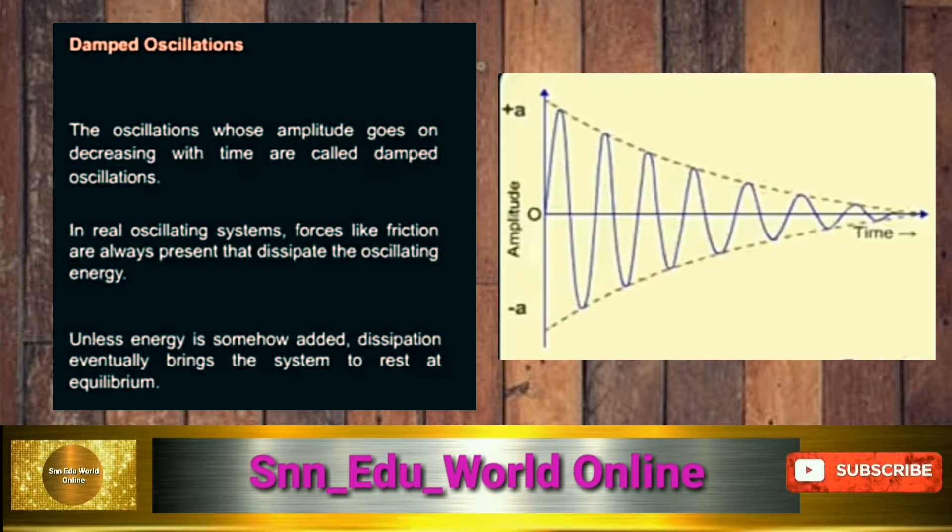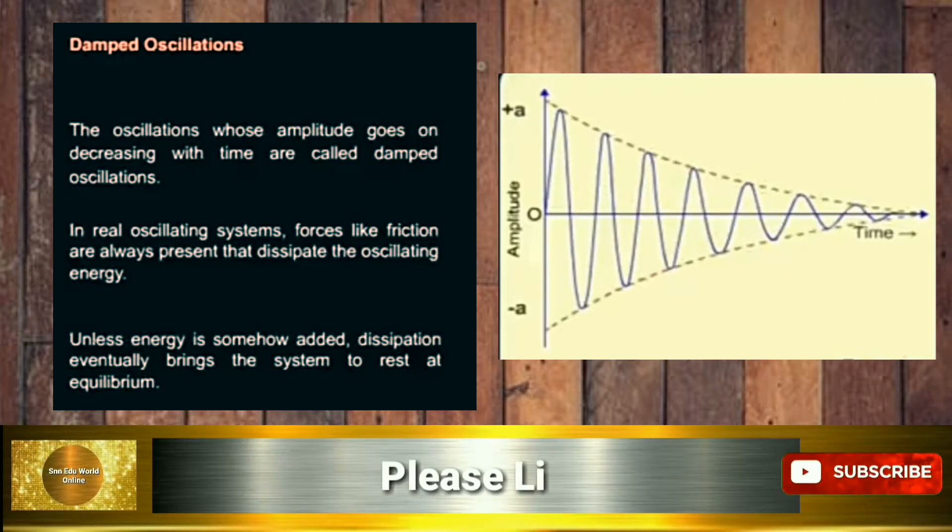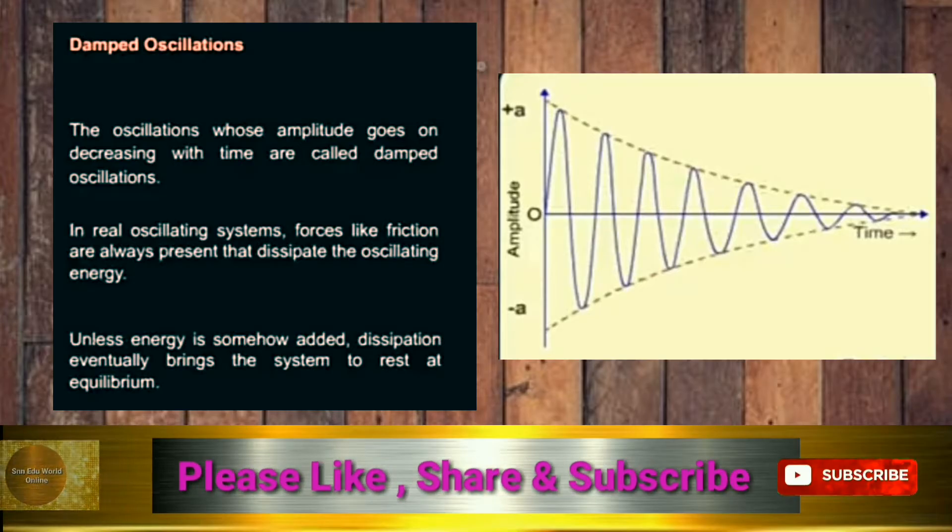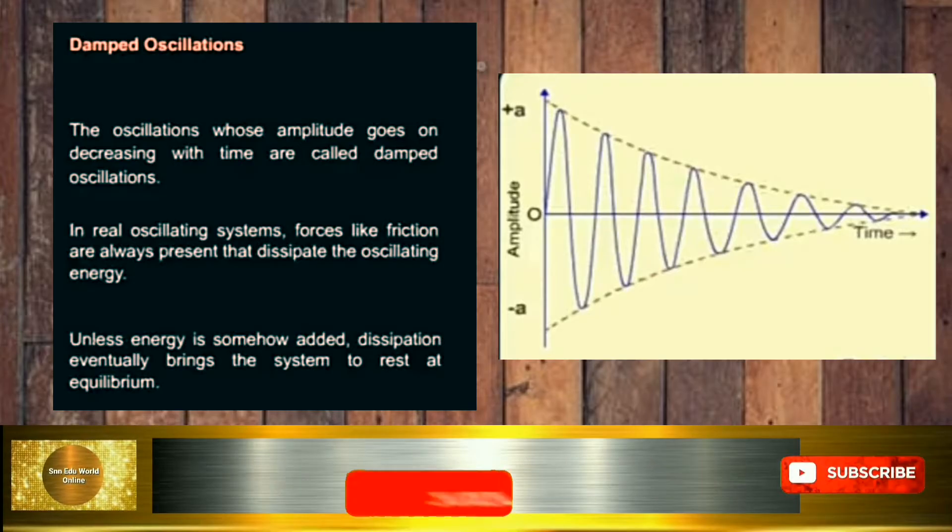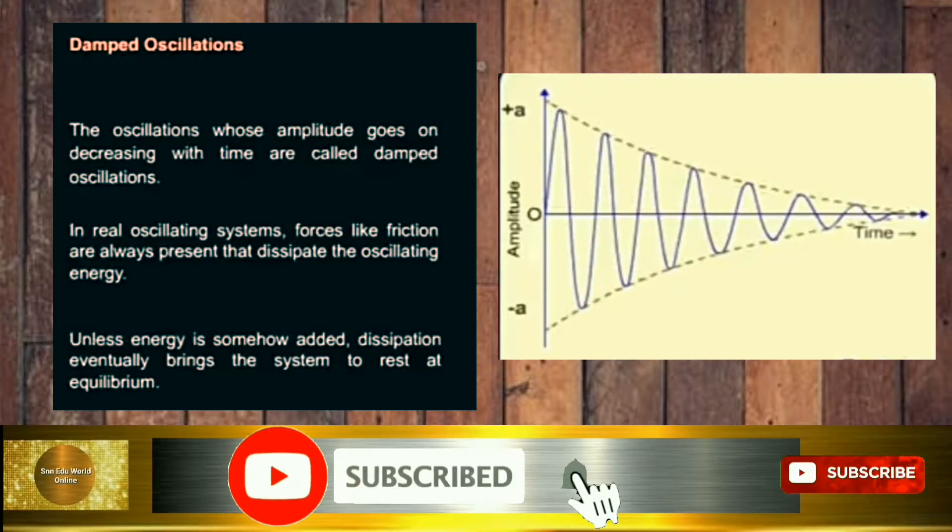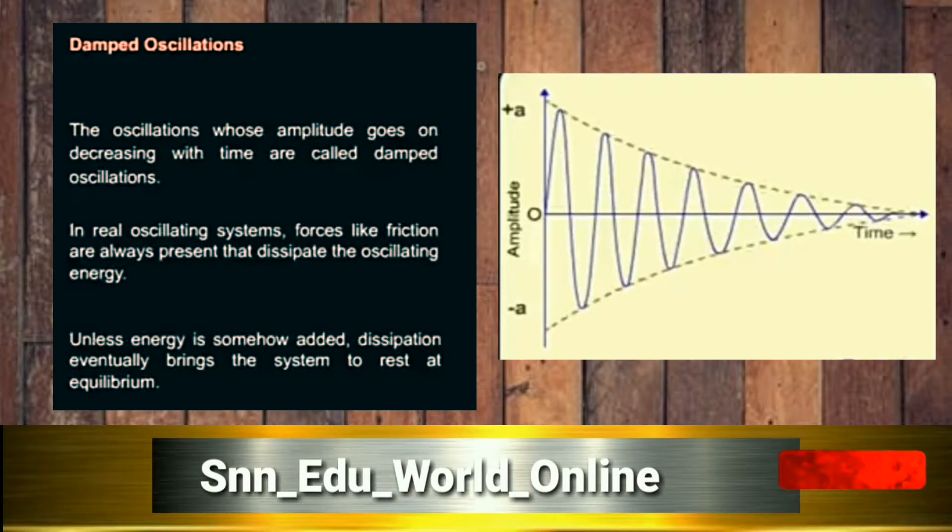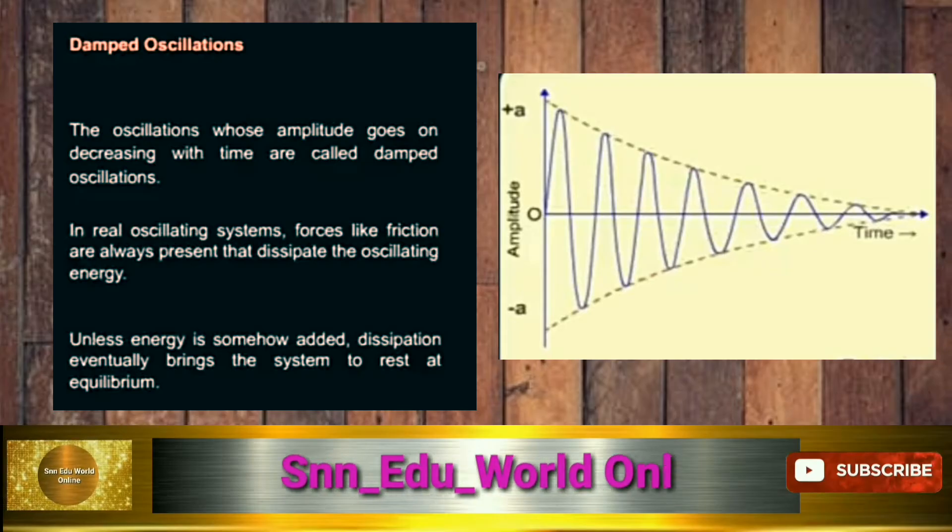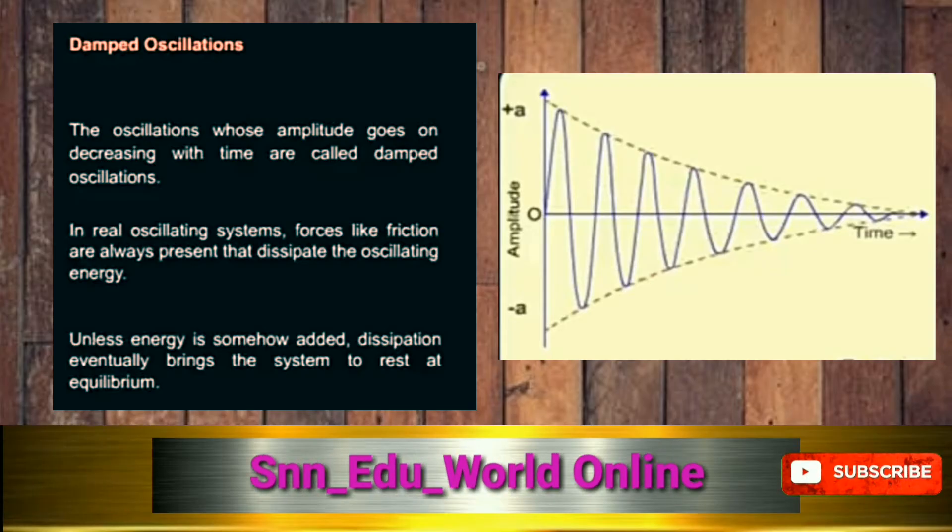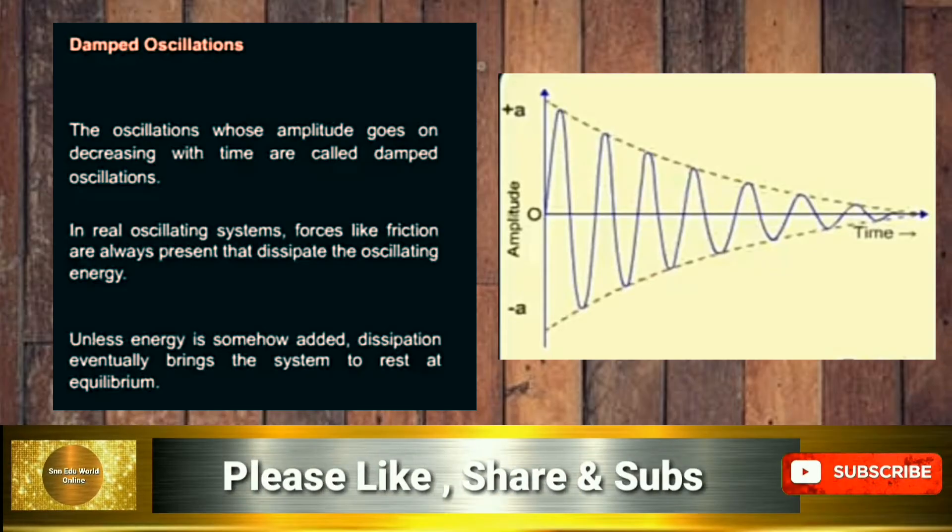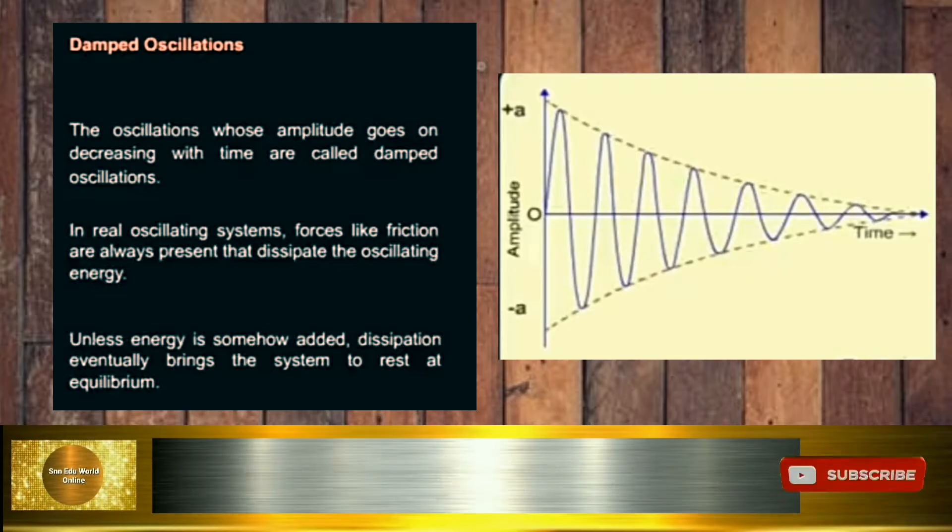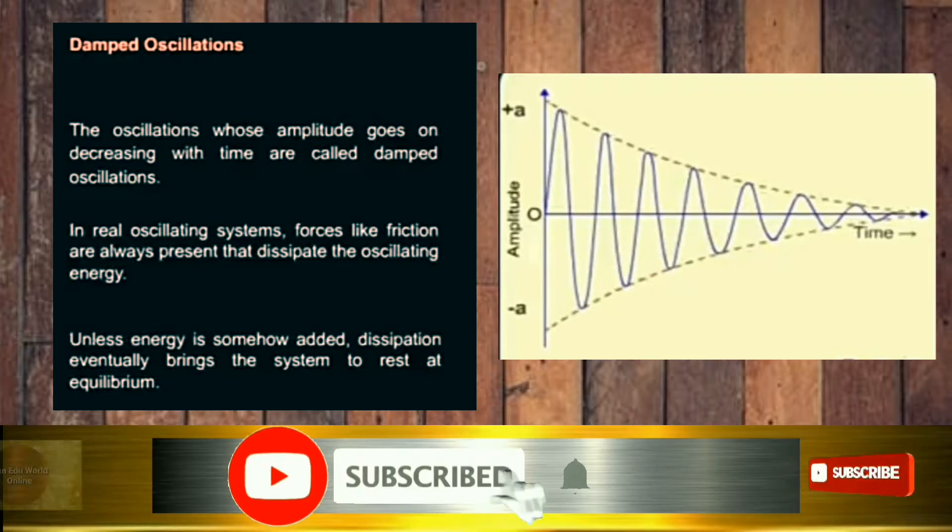Continuously there will be loss of energy, hence there is loss of magnitude of the amplitude. So it is a continuously decreasing amplitude system. This diagram will show you how the energy affects the amplitude. Initially amplitude is plus a maximum and minimum is minus a, and with respect to time it eventually goes on decreasing. This shows the damped oscillation.